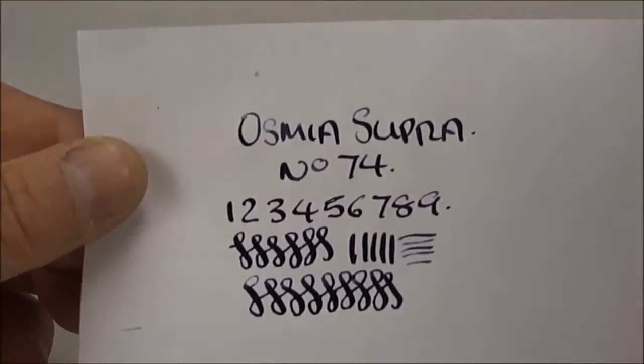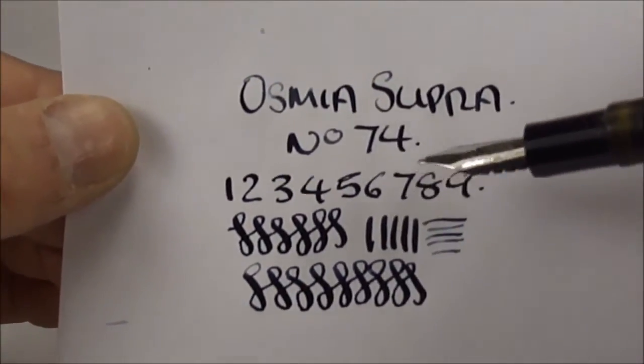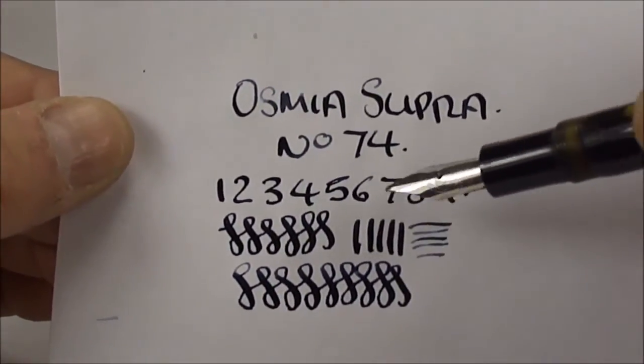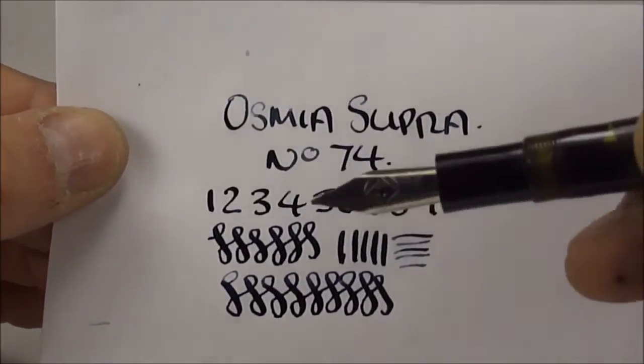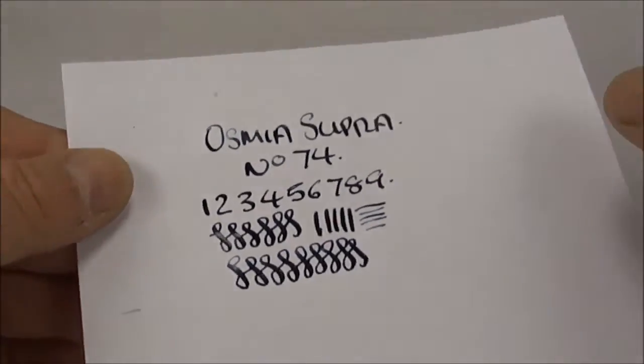So there's a writing sample you can see a lovely variation in the line. So it is an oblique nib and there's a little bit of flexibility within this stainless steel nib.